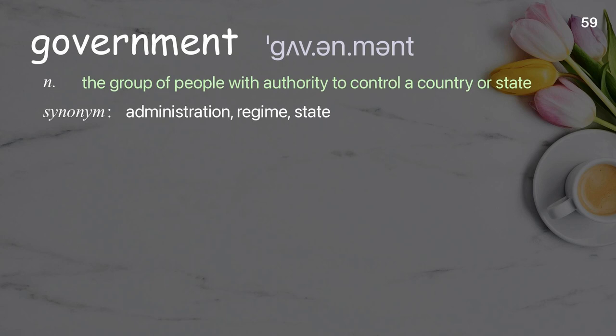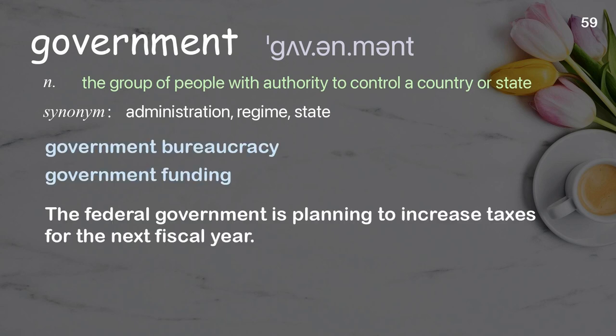Government: the group of people with authority to control a country or state. Examples: government bureaucracy, government funding. The federal government is planning to increase taxes for the next fiscal year.